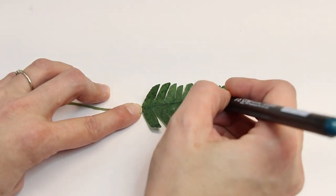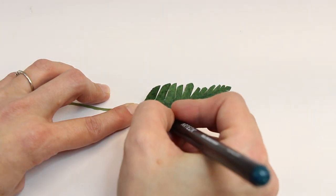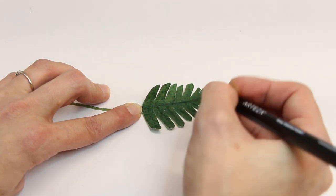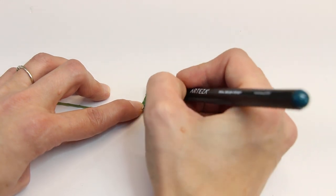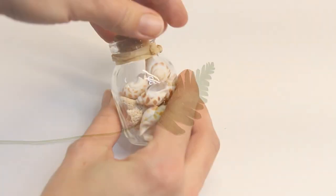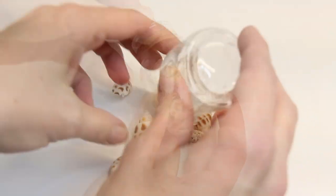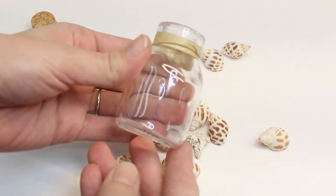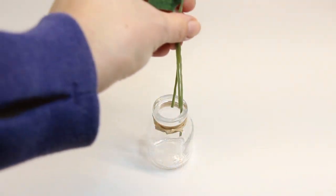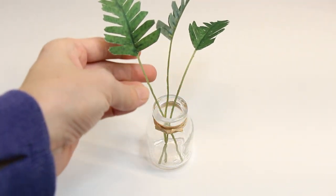Next, take a green marker to add some details to the leaf. Cut a couple more. I found this small jar of shells at the Dollar Store. I thought it would look nice in the dollhouse. Empty the shells and place the palms inside.